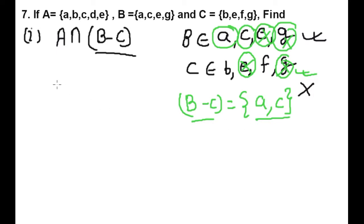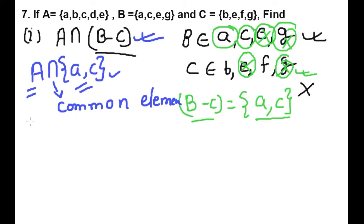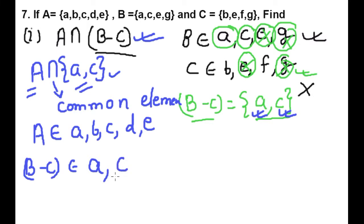So B minus C equals {A, C}. Now we need to find A intersection (B minus C). Intersection means common elements. We have to find common elements between these two sets. Elements of A are: A, B, C, D, E. Elements of B minus C are: A and C.